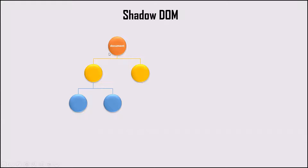Now, if you want to keep the markup structure or style separate or hidden from other code on the page, so that other elements cannot access styles from other parts of the code and can use their own implementation within their document, then Shadow DOM can be used. Shadow DOM is used to hide a part of the document from other parts of the code.